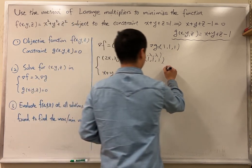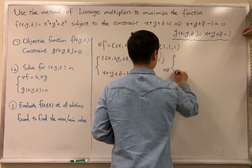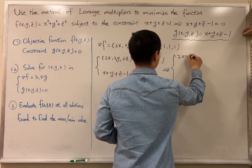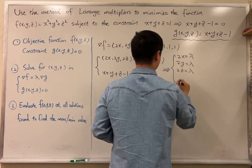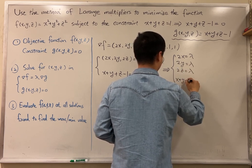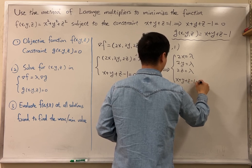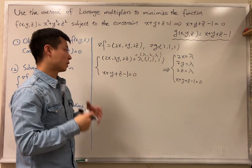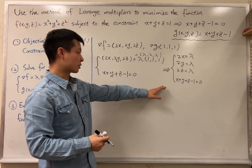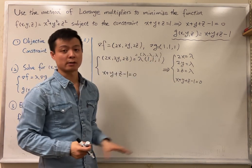So we're going to have a system like this: 2x equal to lambda, 2y equal to lambda, 2z equal to lambda, and last, this one, x plus y plus z minus 1 equal to 0.